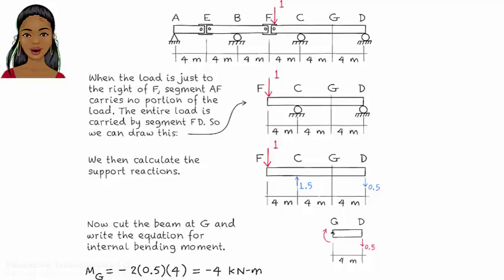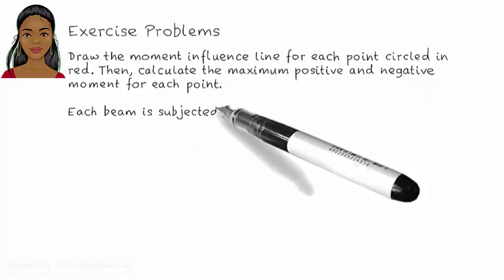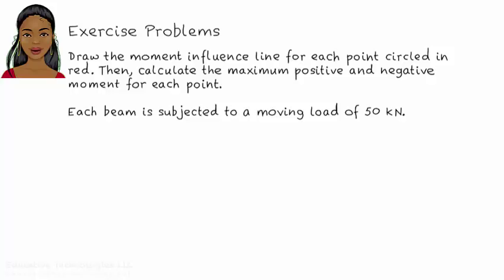Here are a few exercise problems. For each beam shown, draw the influence line for the circled point, then calculate the maximum positive and negative moments at that point for a moving load that exerts a force of 50 kN on the beam.